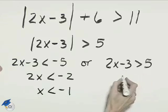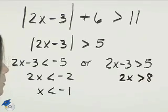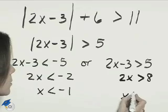For the other one, add 3 to both sides. 2x is greater than 8, and divide both sides by 2. x is greater than 4.